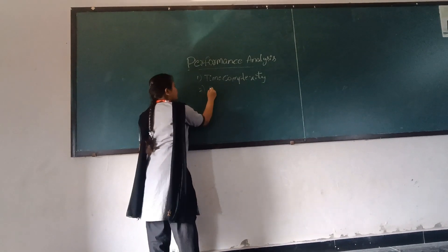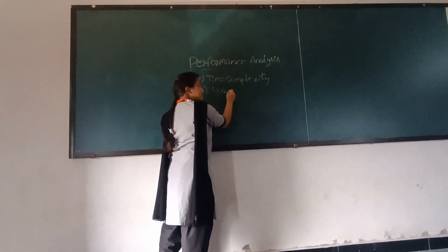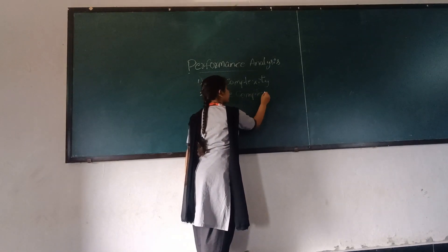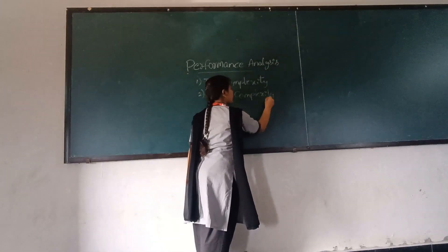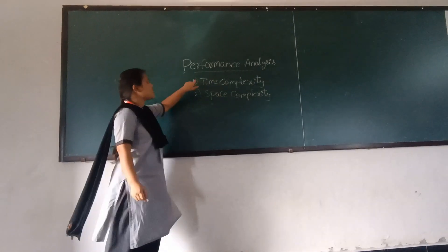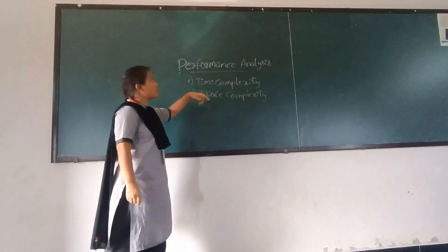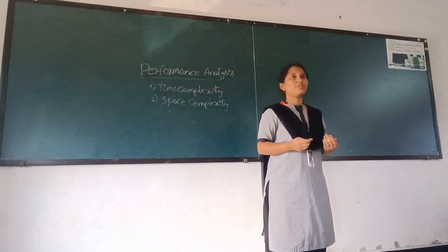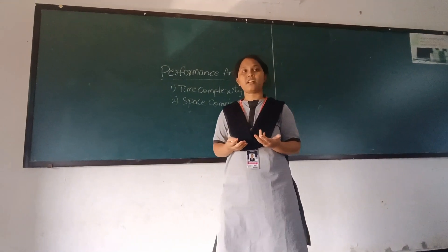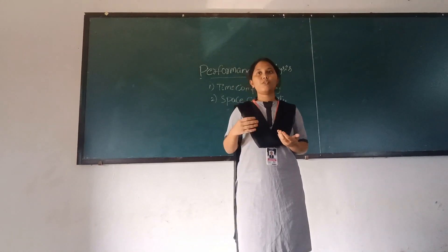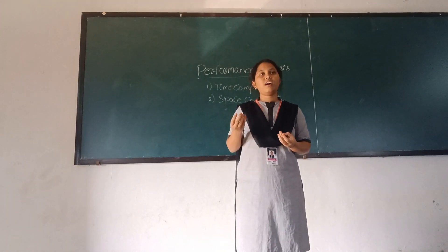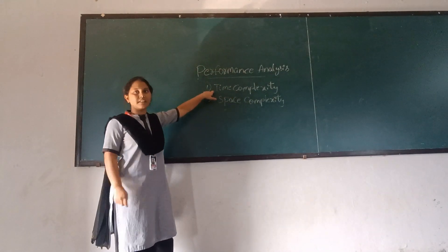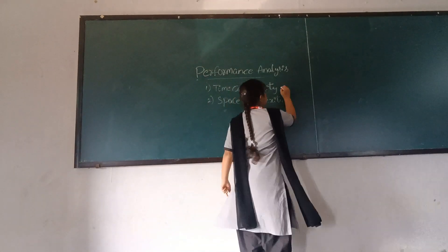The second factor is space complexity. Time complexity is defined as the time taken by the program. The first factor relates to the time of the program and the time of the algorithm. The next factor is the time of the analysis.